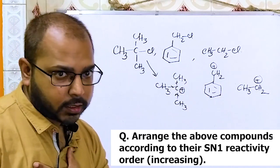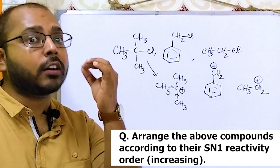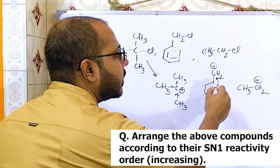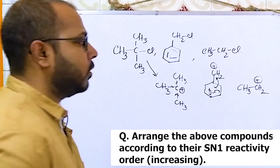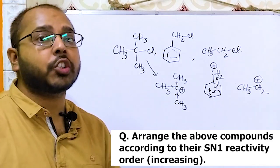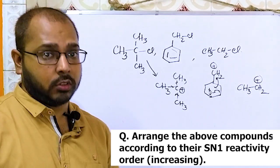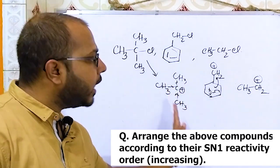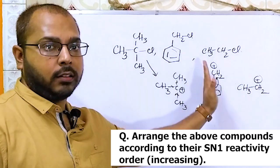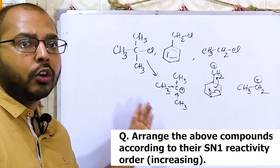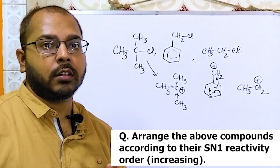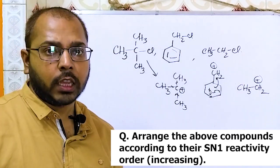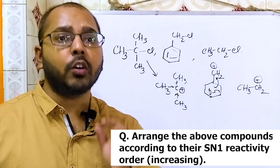However, if the carbocation is 1-degree but resonance support is there — meaning delocalization of pi electron cloud — here the delocalization of the benzene ring takes place and can support the carbocation. But in ethyl chloride, no such resonance is observed.